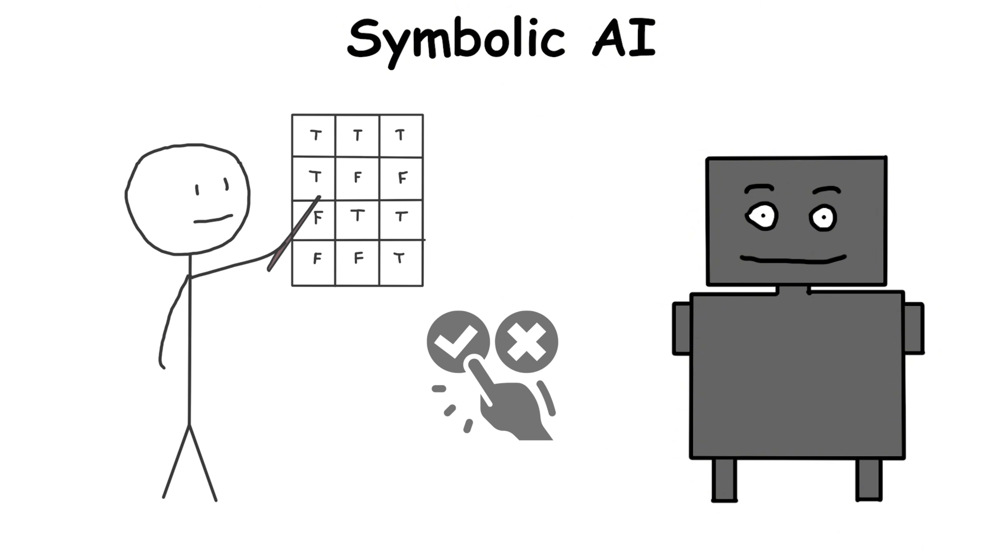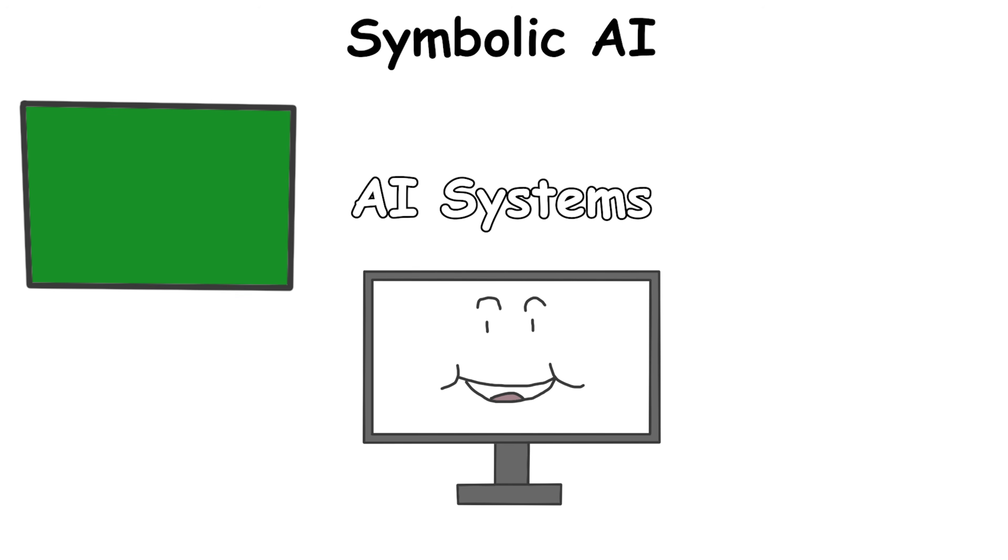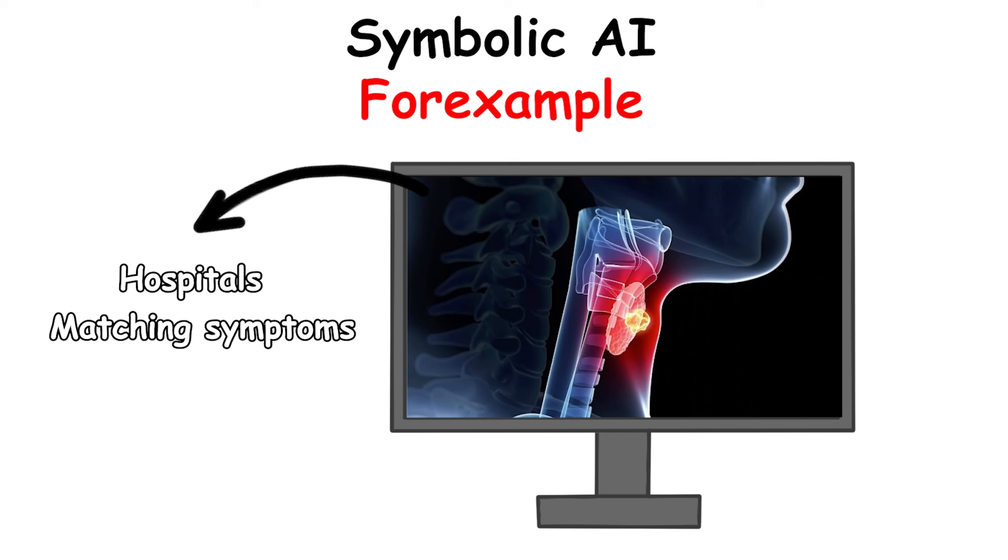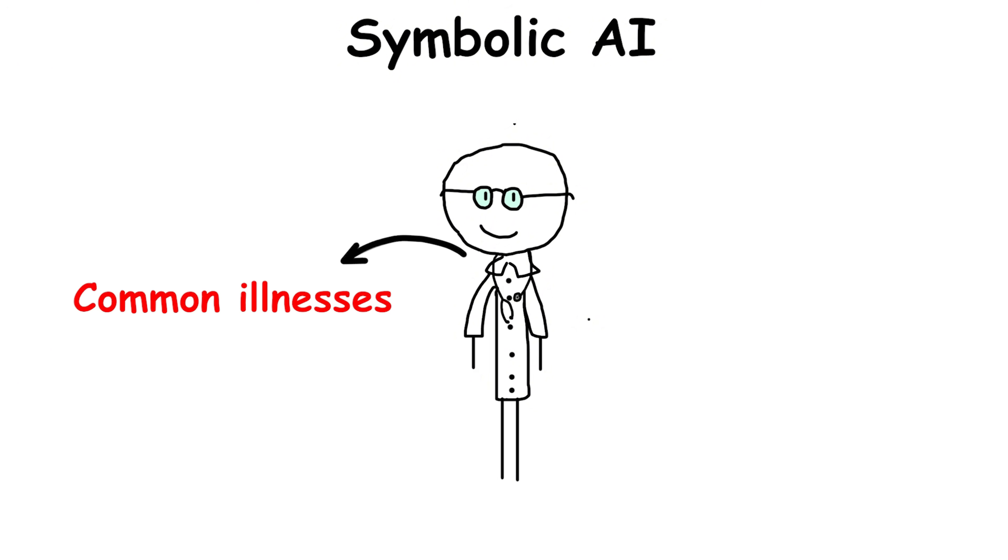It used if-then logic for decision-making, letting early AI systems do things faster than humans in structured environments. For example, expert systems in hospitals could diagnose strep throat by matching symptoms, beating doctors in speed for common illnesses.